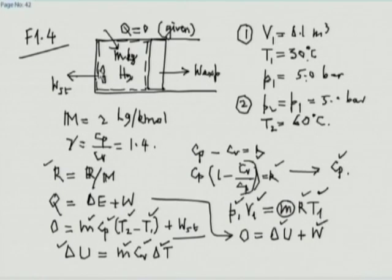SGSITS asks why the process in exercise 1.4 stops at 60°C. The instructor gives two answers: either we stopped stirring and froze the piston, or the process continues but we computed only up to 60°C. Either way, the technicality of the problem does not change.